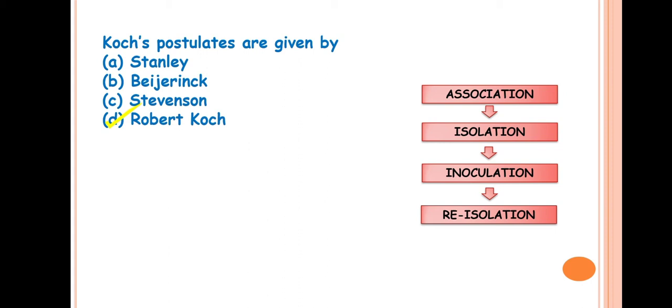Then fourth one is re-isolation. Re-isolation means after the inoculation of the pathogen or the artificial inoculation of the pathogen, that pathogen must be re-isolated from the diseased portion. These are the four postulates of Koch's postulate.